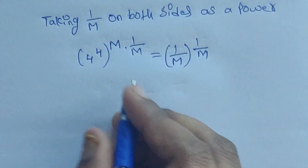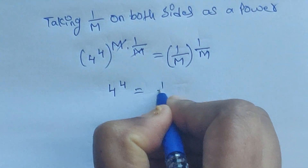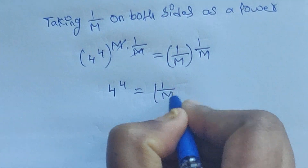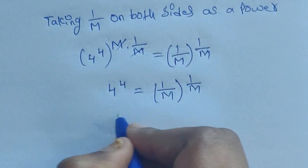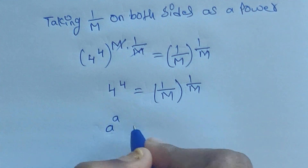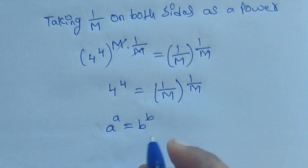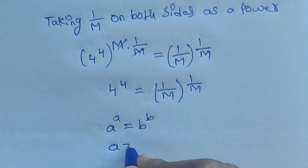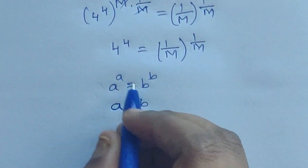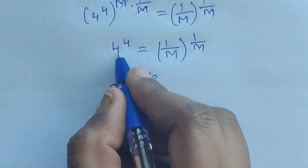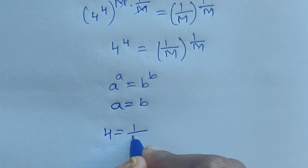So now m gets cancelled. 4 to the power of 4 equals 1 divided by m, whole to the power of 1 divided by m. This is the form of a to the power of a equals b to the power of b, so a equals b. Therefore 4 equals 1 divided by m.